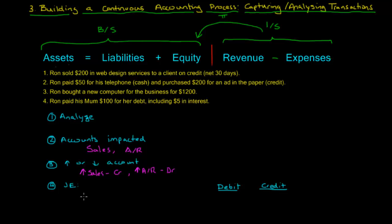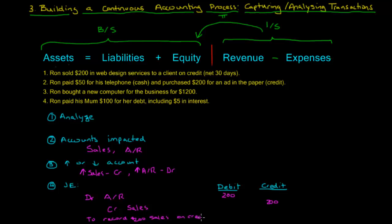In terms of creating the journal entry, this is the normal format used to record journal entries, whether in a manual system or an accounting package. You always put the debit items first, using DR for short. So we would debit accounts receivable for $200, and we would credit sales for $200. The total debit is $200 and the total credit is $200 — they balance, and that's really important.